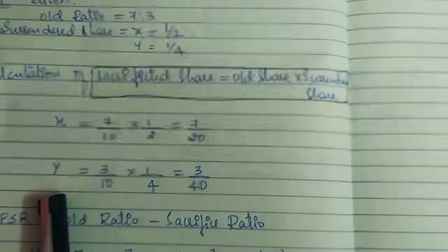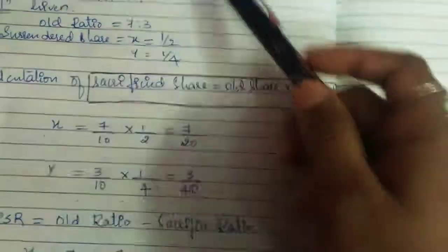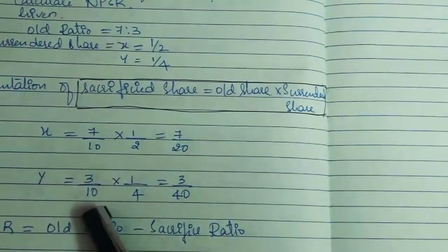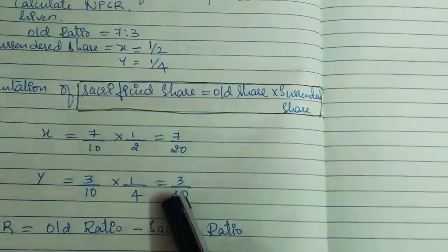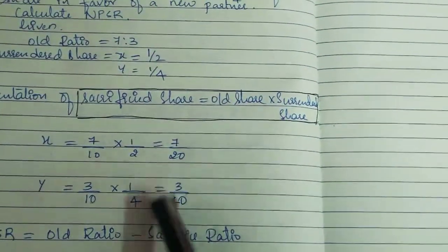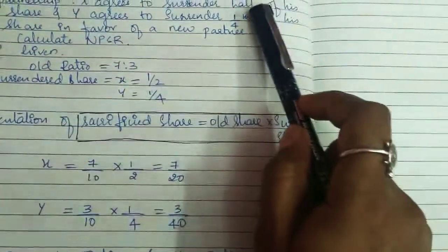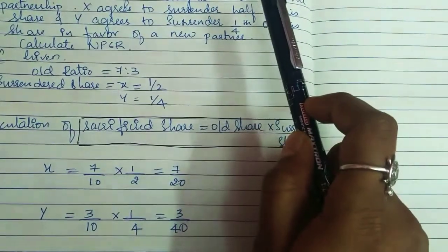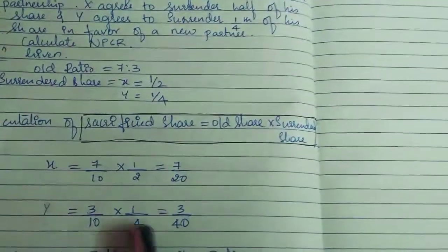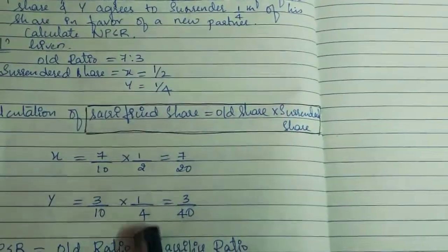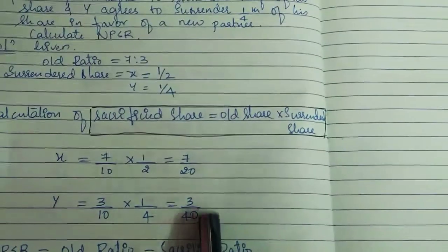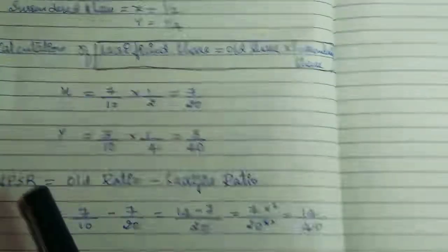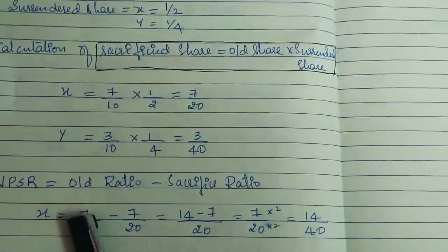For Y: old ratio is 3/10, multiplied by surrender share of 1/4. So Y's sacrificed share = 3/10 × 1/4 = 3/40.